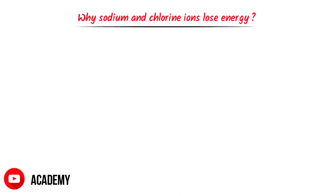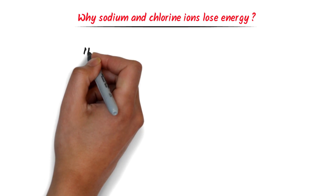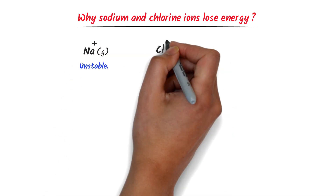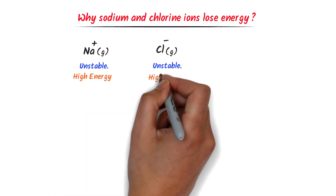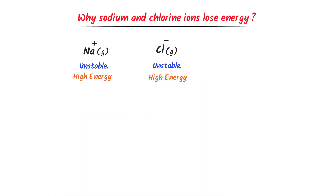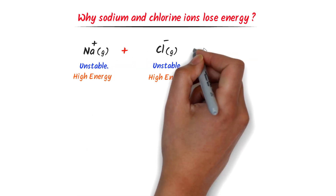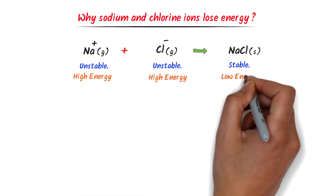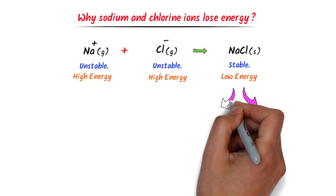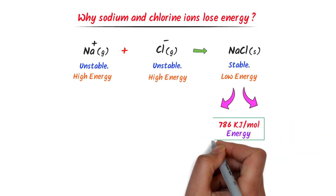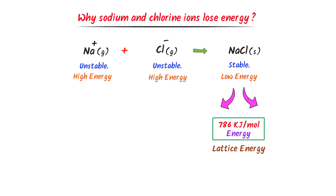Now if you ask me why sodium ion and chlorine ion release energy when they are combined together — the answer is simple. Sodium ion and chlorine ion are unstable because they have high energy. They want to lower their respective energies by combining together. When they combine, they become stable and release energy, which is known as lattice energy. Remember that lattice energy is the energy released when an ionic bond is formed between two gaseous ions.